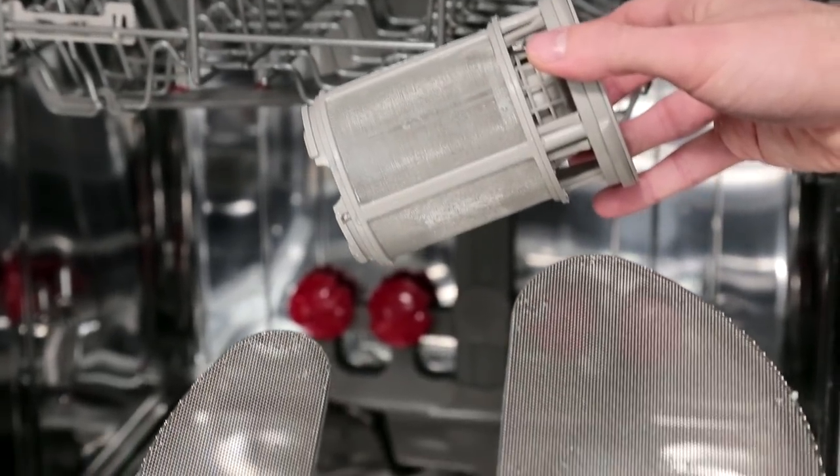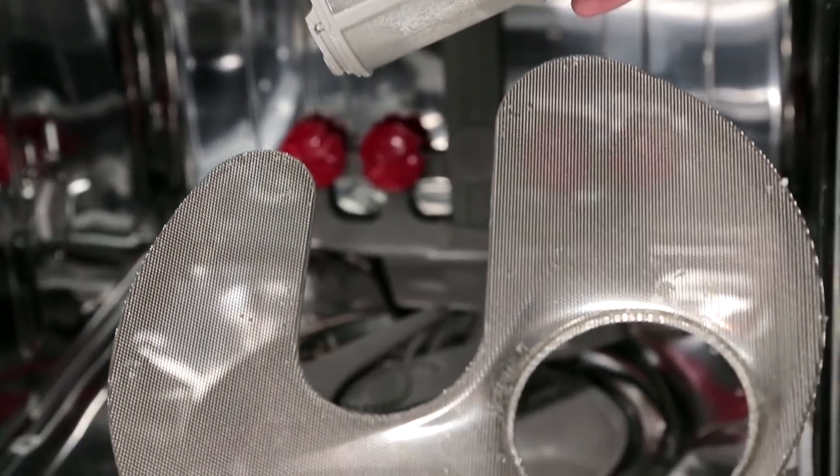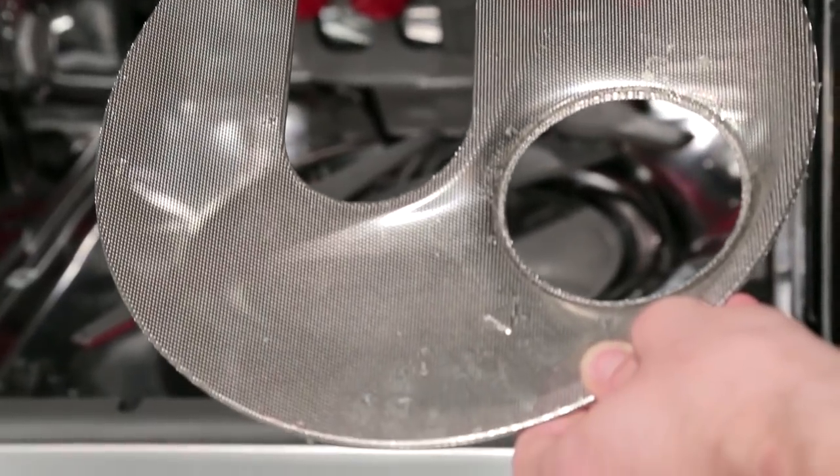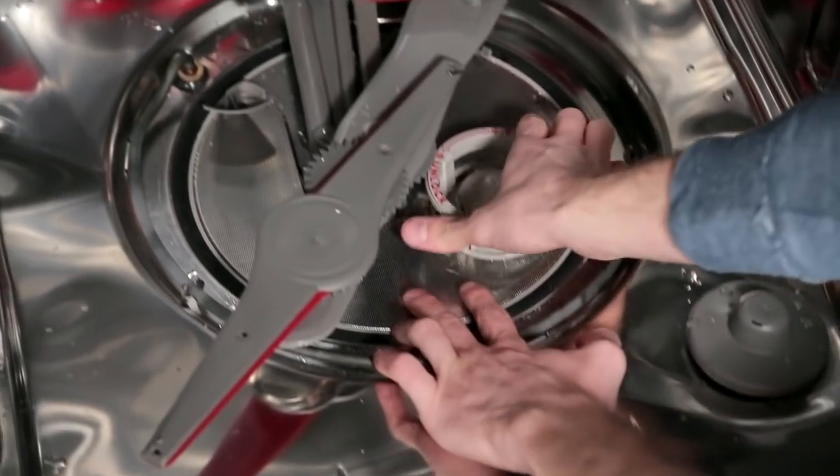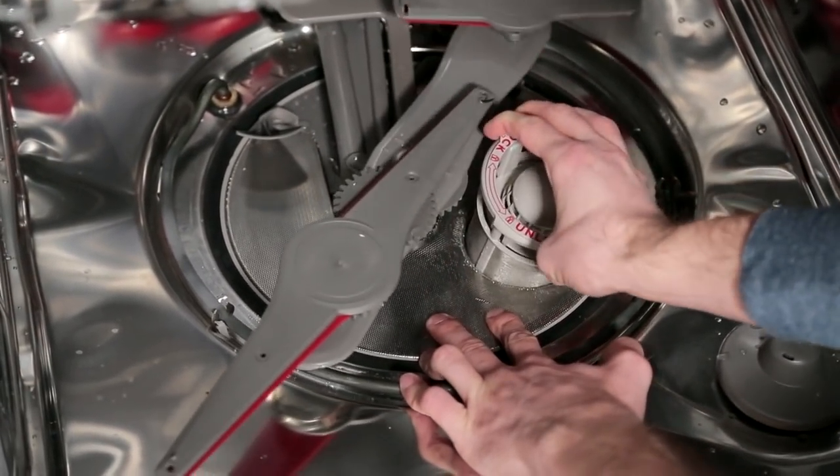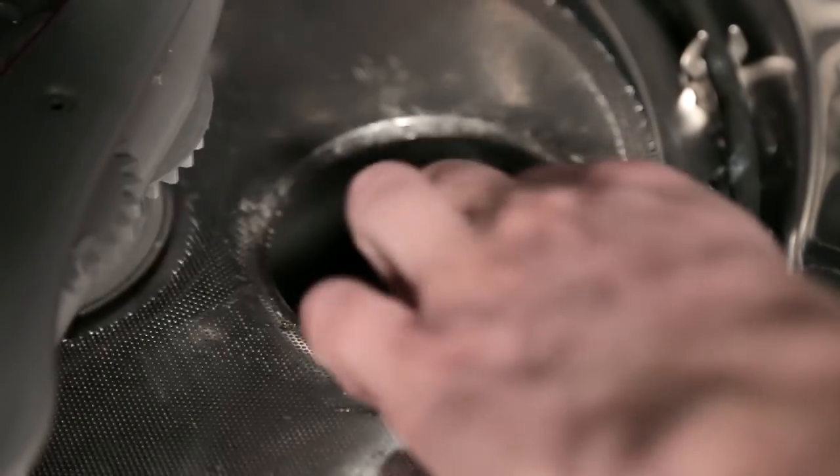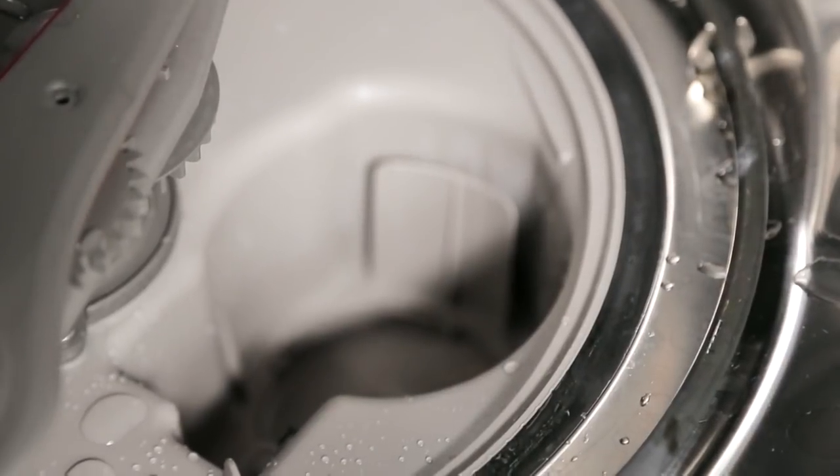The triple filter system consists of two parts: an upper filter assembly and a lower filter. Filter removal instructions: turn the upper filter assembly a quarter turn counterclockwise and lift out. Grasp the lower filter and pull forward to remove.